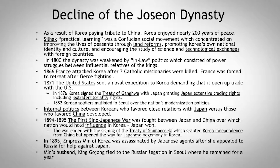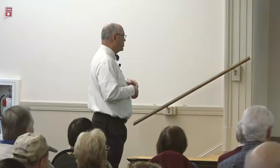In 1894-1895, the first Sino-Japanese War was fought between Japan and China over which nation would hold influence in Korea. Japan won the war, ending with the signing of the Treaty of Shimonoseki, which granted Korean independence from China but opened the way for Japanese hegemony in Korea. In 1895, Empress Min of Korea was assassinated by Japanese agents after she had appealed to Russia for help against Japan.